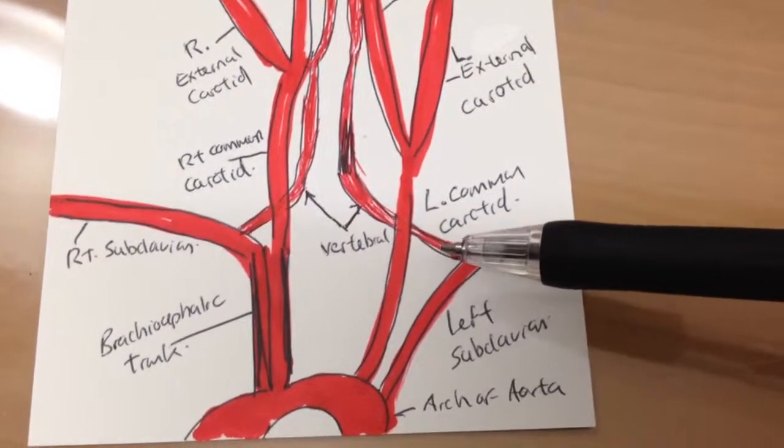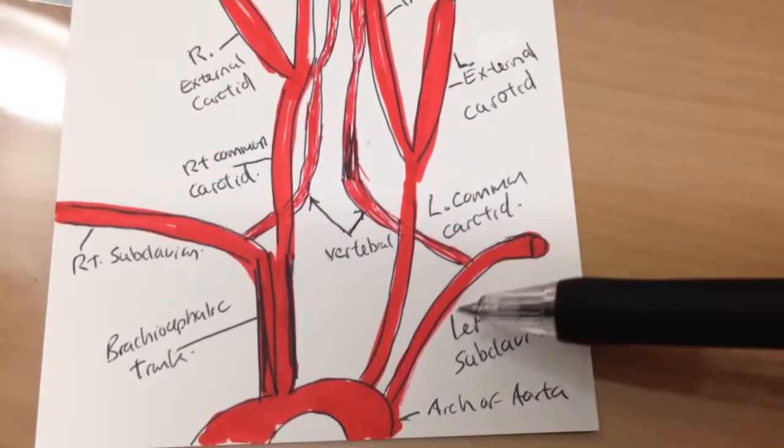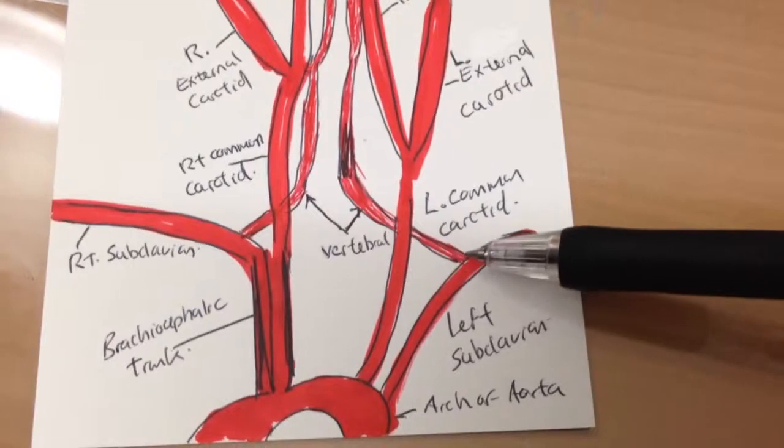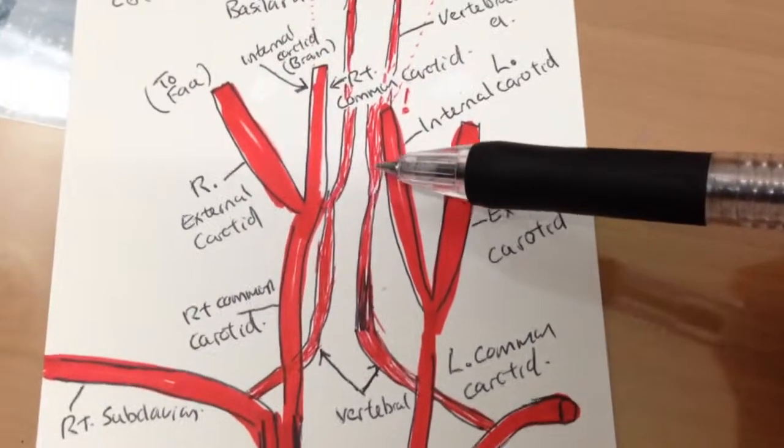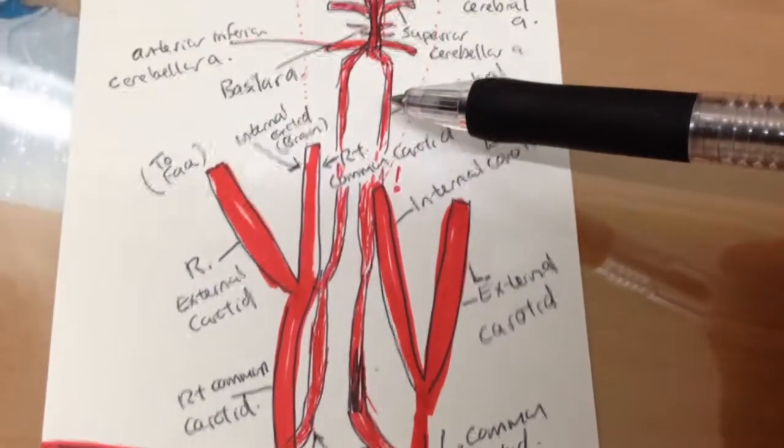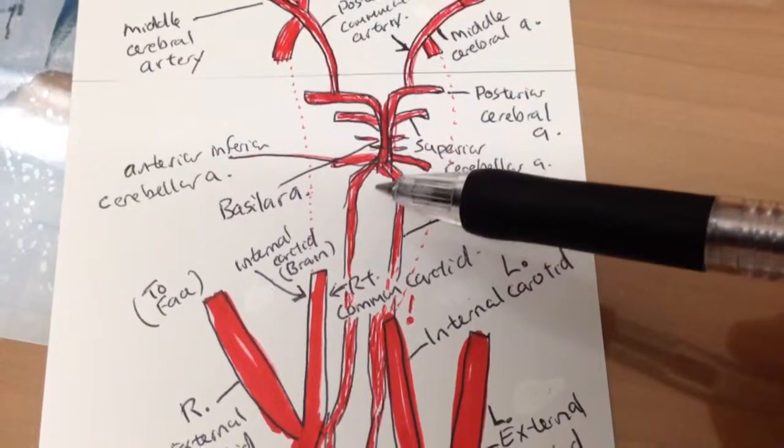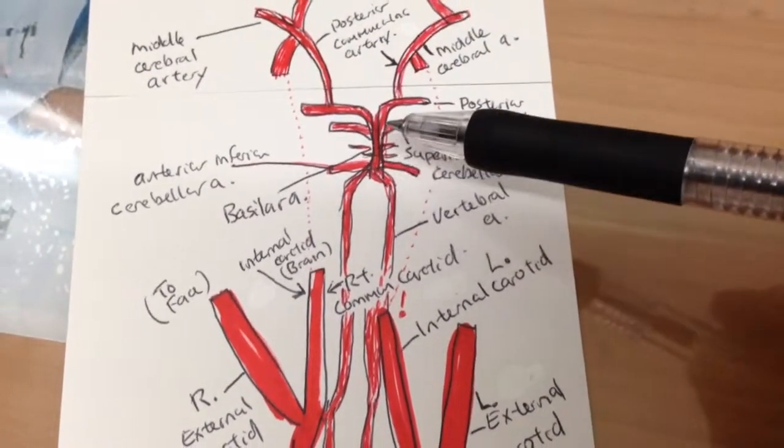Remember that the vertebral arteries and the internal carotid arteries are bringing the blood into the brain. The vertebral arteries are coming off the subclavian arteries. I don't know if you can see it here, another very scary drawing, but somehow they do come up.